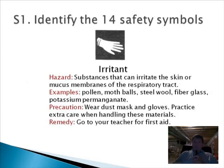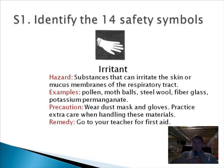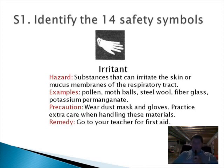The next one is the irritant symbol, shown as a gloved hand. This applies when we deal with chemicals that can be irritating to the skin or cause discomfort. It's not necessarily a dangerous chemical — you're not going to be seriously hurt, but it's more of an inconvenience. Things like pollen, mothball, steel wool, fiberglass, and potassium permanganate will irritate the skin, making it red and itchy. When working with this kind of stuff, consider wearing a dust mask and gloves. If something gets on you, wash your hands and rinse with plenty of water.